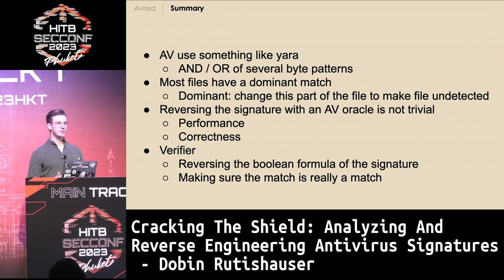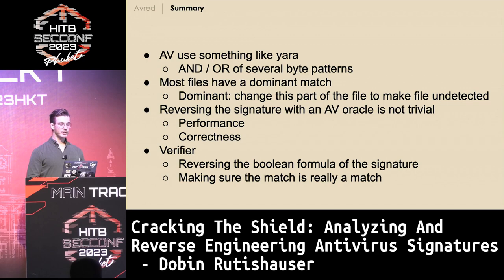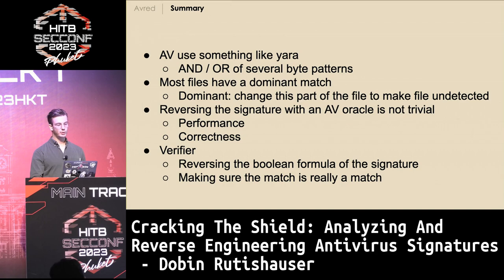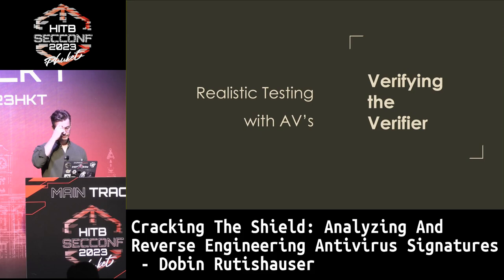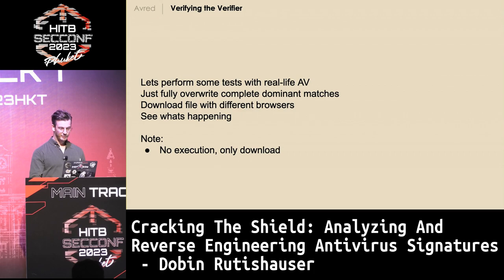Summary so far: antivirus probably uses something like Yara rules with ANDs or ORs of byte patterns. Most files seem to have a dominant match which we can change to make them undetected. Reversing the signature with an antivirus oracle is not trivial — it took a lot of time to make this work reliably. One key step was using the verifier to make sure the output of the divide and conquer algorithm is correct. Of the verifier, I need to verify the verifier.